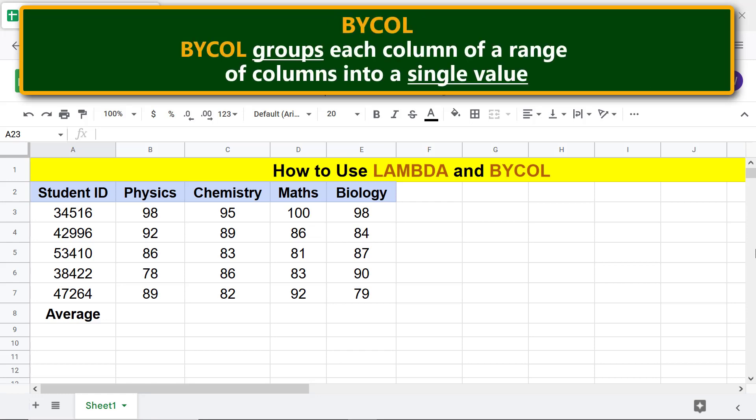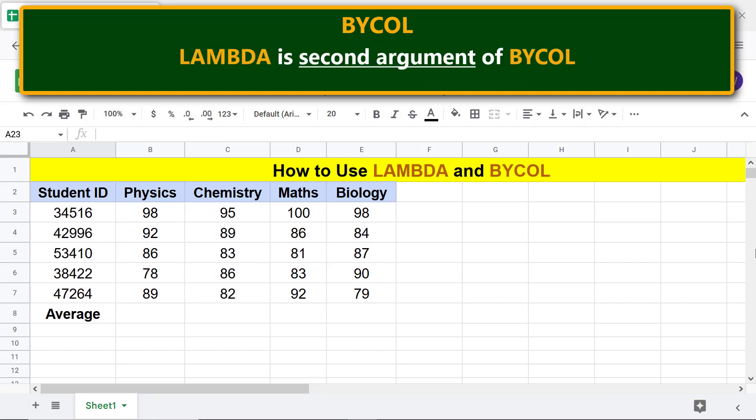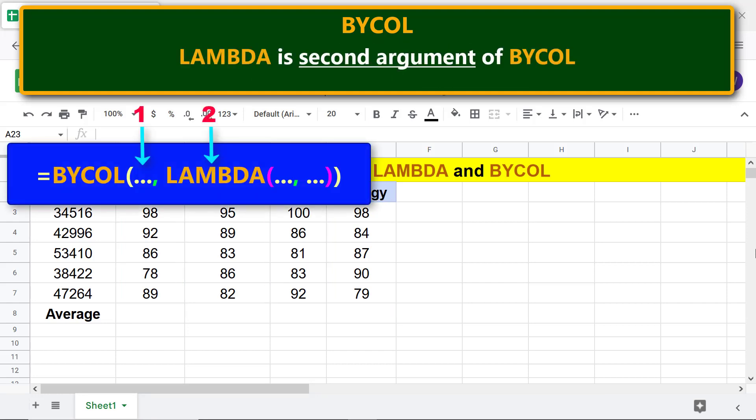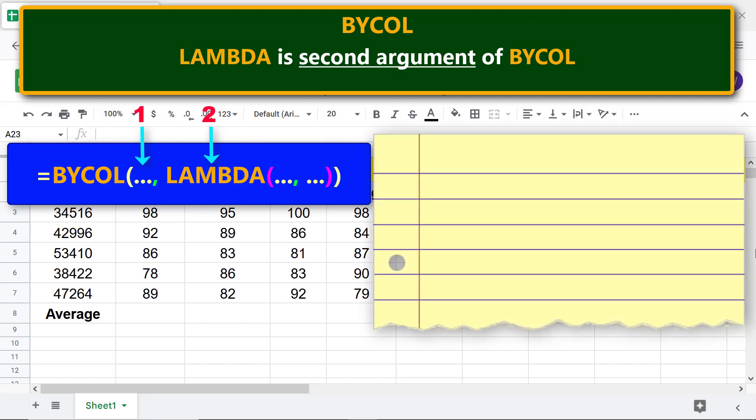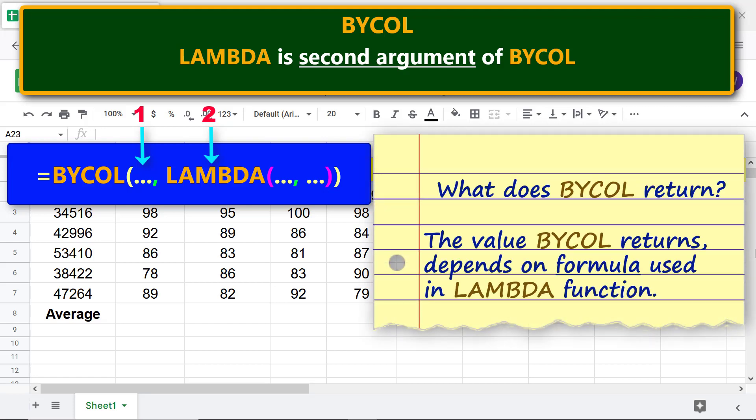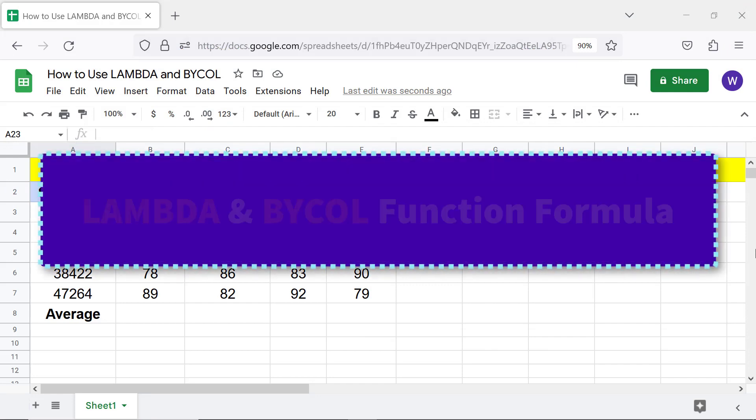BYCOL function: BYCOL groups each column of a range of columns into a single value. LAMBDA is the second argument of BYCOL. What does BYCOL return? The value BYCOL returns depends on the formula used in the LAMBDA function.